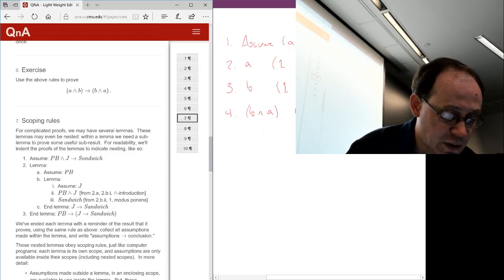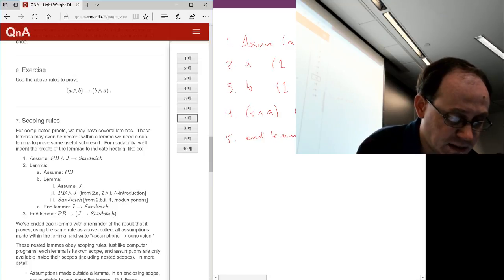And then finally, we end our lemma. And when we end the lemma, we take the assumptions, which are here, right? And we put them to the left of the implies, A and B.